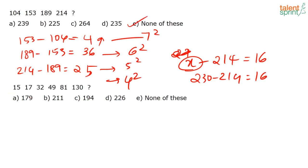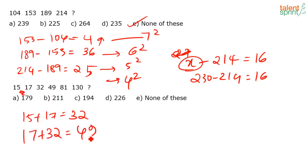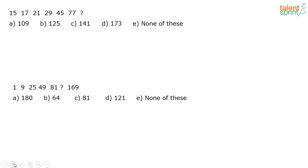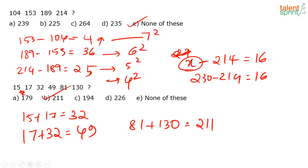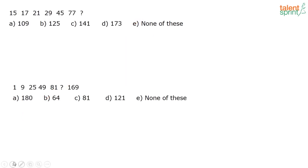Series: 15, 17, 32, 49, 81, 130, _. The pattern is adding adjacent terms: 15 + 17 = 32; 17 + 32 = 49; 32 + 49 = 81; 49 + 81 = 130. So the next term is 81 + 130 = 211 — answer option B.